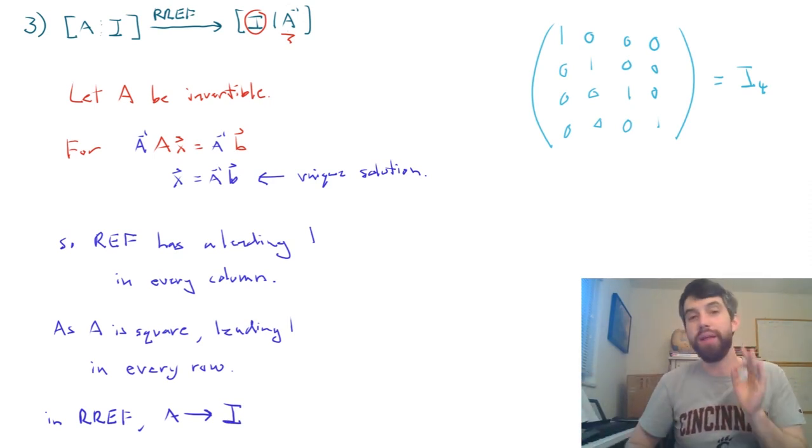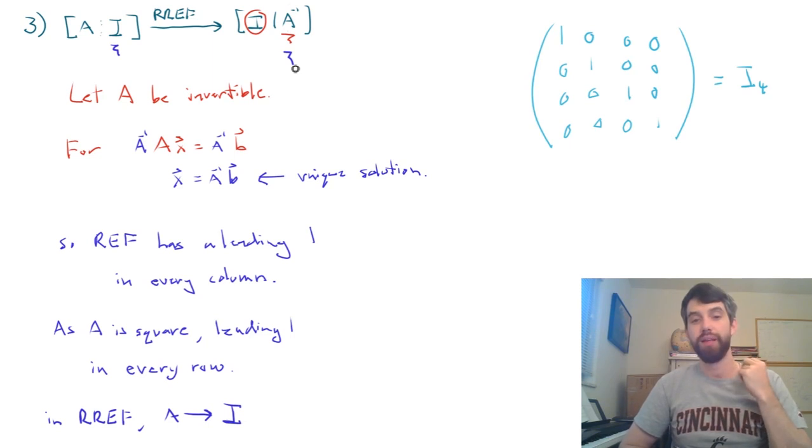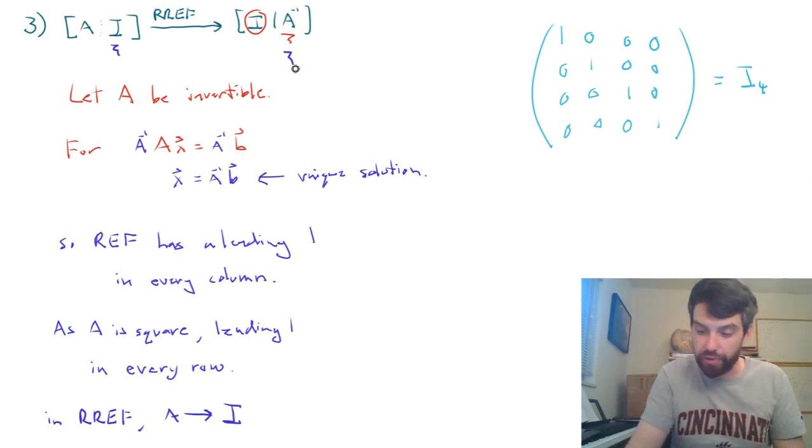And then knowing that it must go to the identity matrix, by the previous analysis, it sends this appended i to the A inverse that I have. So my final conclusion is A is invertible if and only if its reduced row echelon form is the identity matrix.